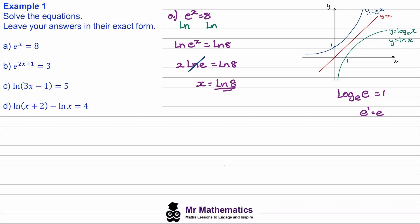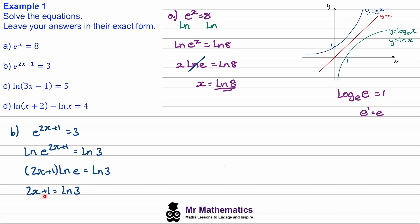For part B, again, because this x is a power, we need to take the natural log of both sides, and that will allow us to bring this power down in front. Then we know the natural log of e is just 1. So now we get 2x plus 1 equals the natural log of 3. Then we take away the 1 and divide both sides by 2, so x equals the natural log of 3 minus 1, divided by 2.